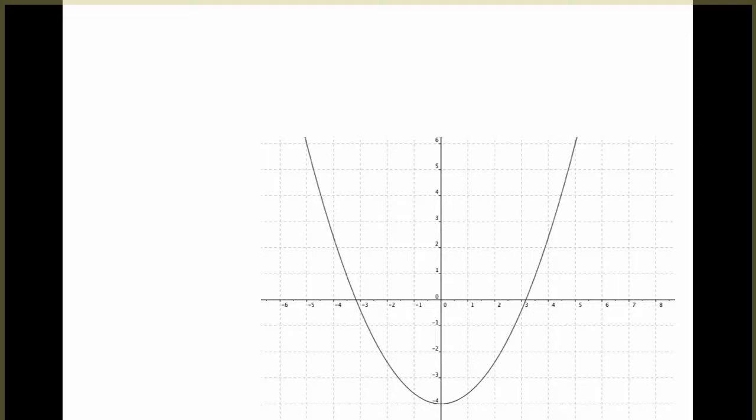Now that we have discussed how to graph different transformations, we are going to work on the opposite skill. So we are going to be given a graph of one of our parent functions, and just from the graph, we should be able to come up with the equation. The first thing that you'll always want to do when finding an equation is identify what your parent function is. If you just look at the shape of the graph, you should be able to figure that out.